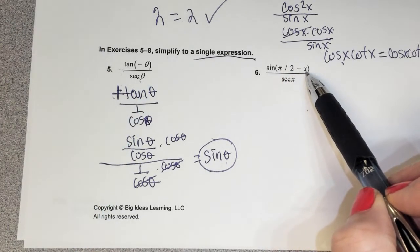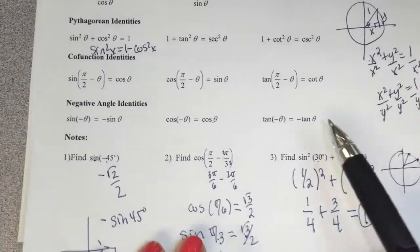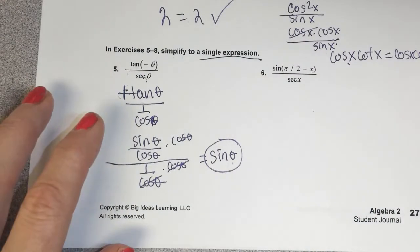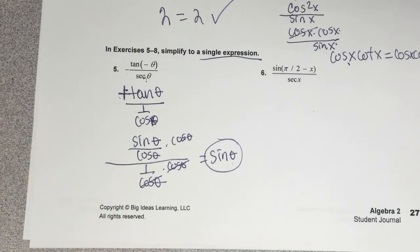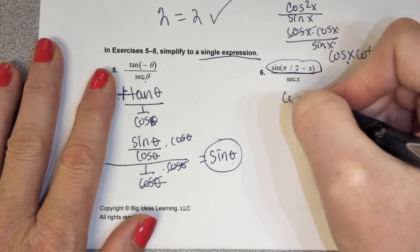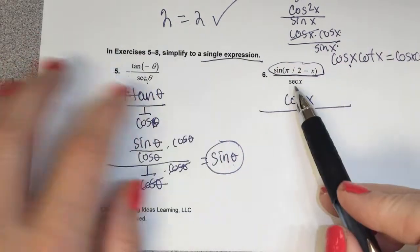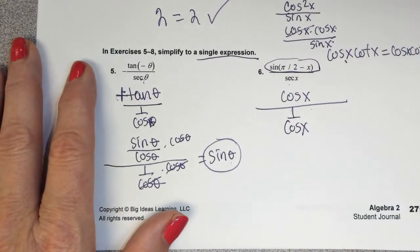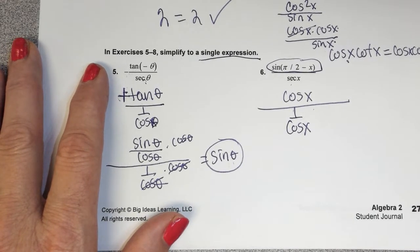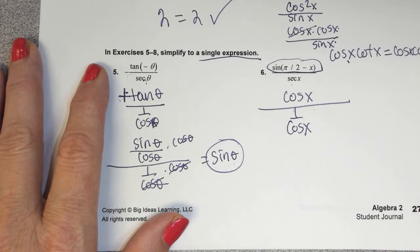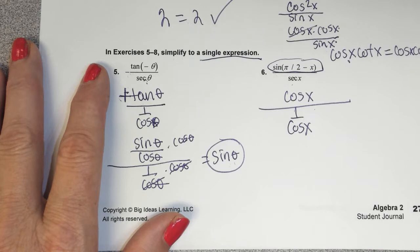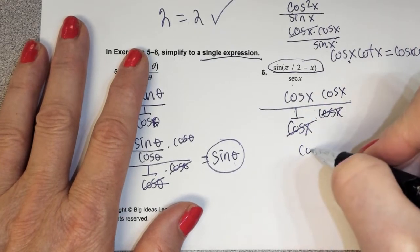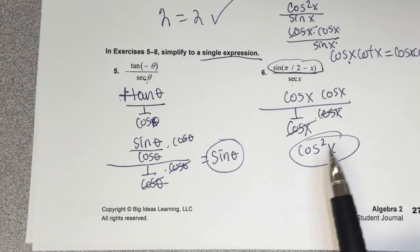Sine of pi/2 minus x — using the co-function identity, that's just cosine x. Then secant becomes 1 over cosine x. Multiplying the numerator and denominator, we get cosine squared x. That's our single expression.